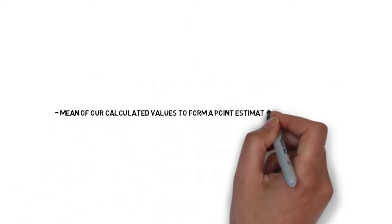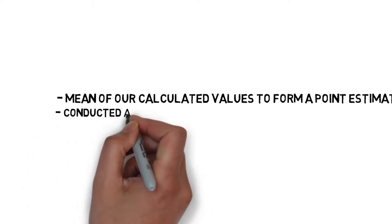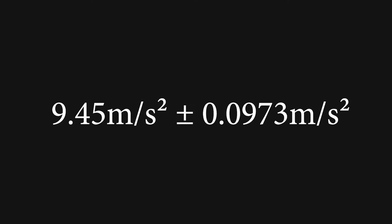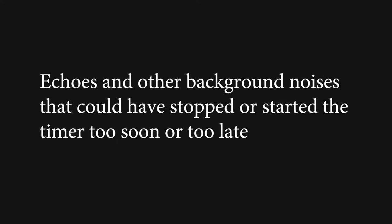We used the mean of our calculated values to form a point estimate for g. To find our margin of error, we made sure our data fulfilled the necessary conditions and conducted a 90% confidence t-interval for means using Google Sheets' CONFIDENCE.T function. Our final estimate for g is 9.45 meters per second squared plus or minus 0.0973 meters per second squared, resulting in an interval of about 9.35 to 9.55 meters per second squared. We are 90% confident this interval captures the true value of g. We hypothesize the discrepancy is mainly due to echoes and background noises that could have stopped or started the timer too soon or too late.